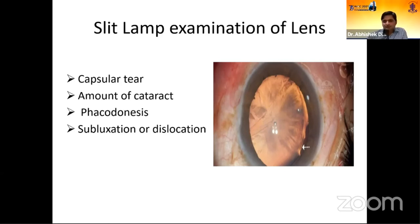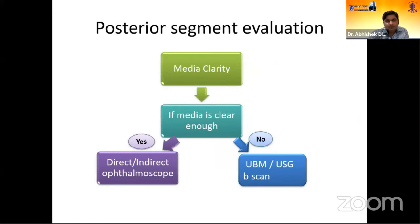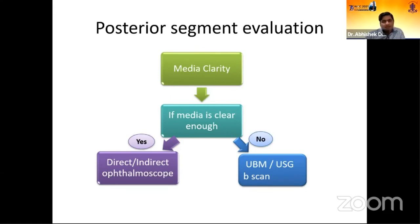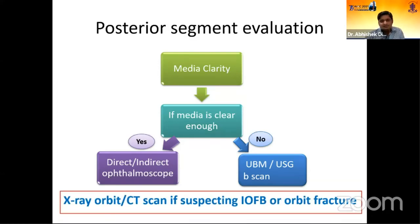For posterior segment evaluation, if the media is clear, do direct or indirect ophthalmoscopy to assess the optic disc, macula, and periphery. If the media is not clear, plan ultrasound biomicroscopy to assess posterior capsular integrity and ciliary body condition, or ultrasound B-scan to assess retinal status. In cases where you suspect an intraocular foreign body or orbital fracture, request X-ray of the orbit or a CT scan.